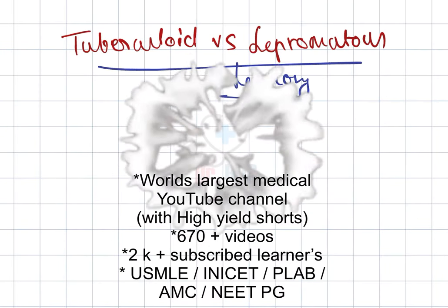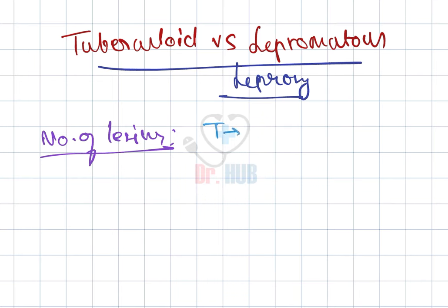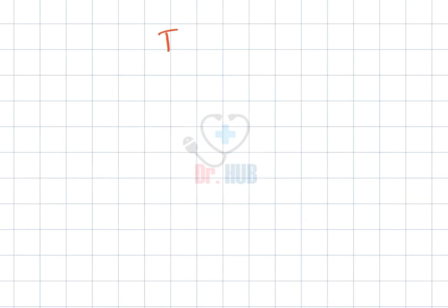Tuberculoid versus lepromatous leprosy. The number of lesions in T includes 1-10. In L, it is 100 and confluent. In case of T, the distribution is asymmetrical.